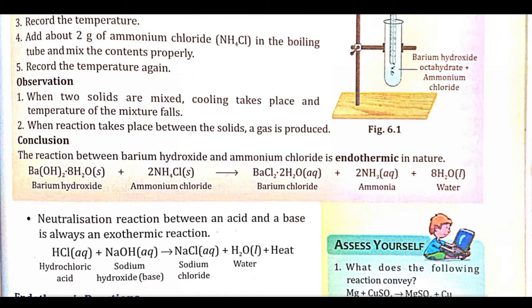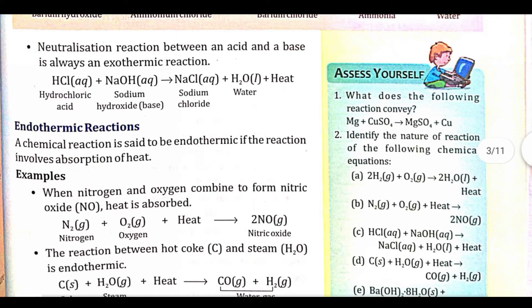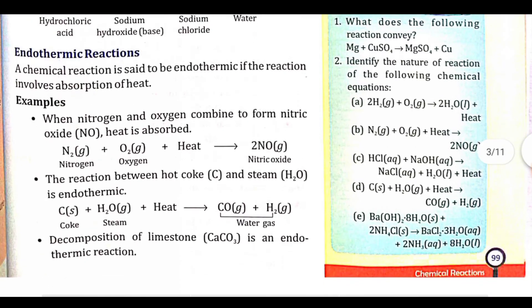This is an endothermic reaction example. Ba(OH)₂·8H₂O + 2NH₄Cl → BaCl₂·2H₂O + 2NH₃ + 8H₂O. Neutralization reactions between acids and bases are always exothermic reactions. For example: HCl + NaOH (aqueous) → NaCl + H₂O + heat.